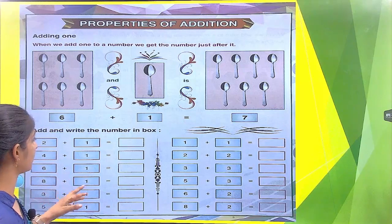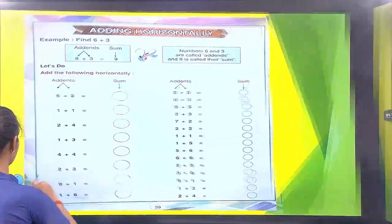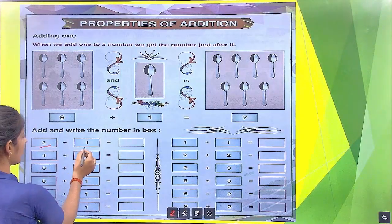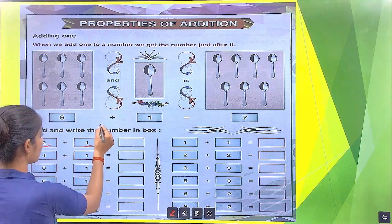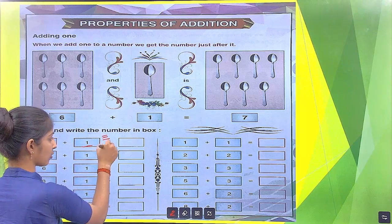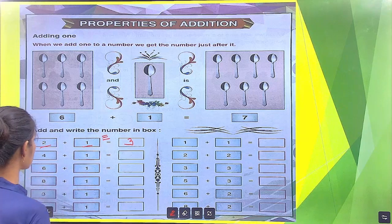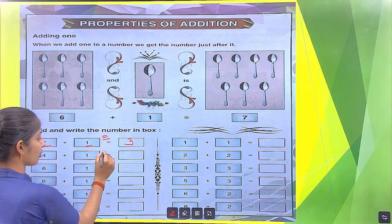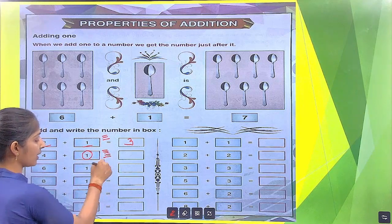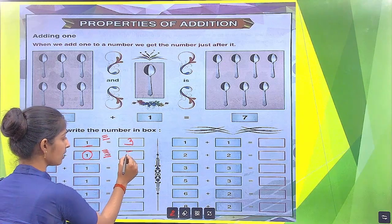Add and write the number in the box. Now we add. This is 2 and this is 1. Draw 2 lines: 1, 2. This is 1, so draw 1 line. Calculate total lines: 1, 2, 3. We put here 3. Similarly, next there are 4. We draw 4 lines: 1, 2, 3, 4. This is 1, so we draw 1 more. How many total lines? Calculate: 1, 2, 3, 4, 5. We put here 5.